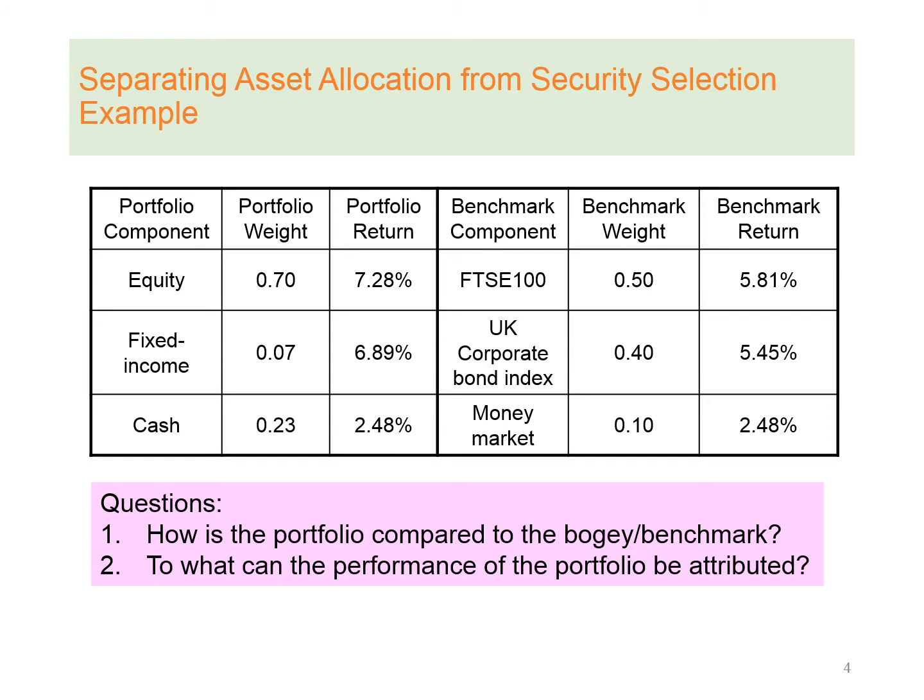Let's consider an example in which a portfolio manager's top-down portfolio strategy consists of two dimensions. First, he decides on a broad allocation across three asset classes: equity, fixed income, and cash. As an asset allocation policy, he constructed a portfolio with 70% of the fund in equity, 7% in fixed income, and 23% in cash. The FTSE 100, UK corporate bond index, and money market rate are used as benchmarks.